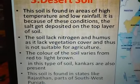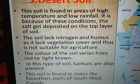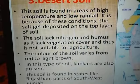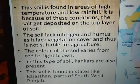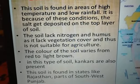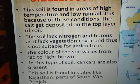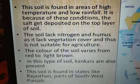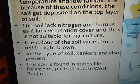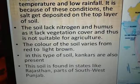The color of desert soil varies from red to light brown. Pebbles and kunkars are found in it, making this not a smooth soil. It is found in states like Rajasthan and parts of southwest Punjab.